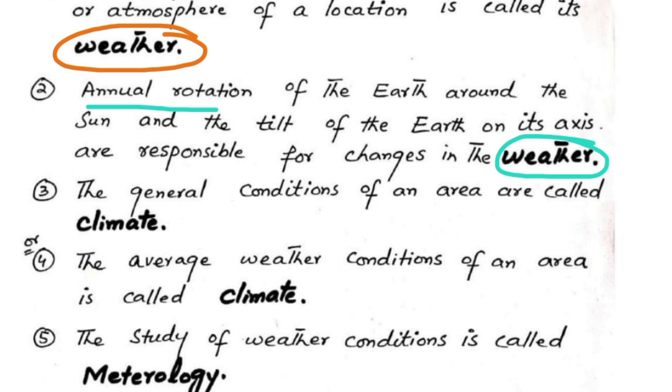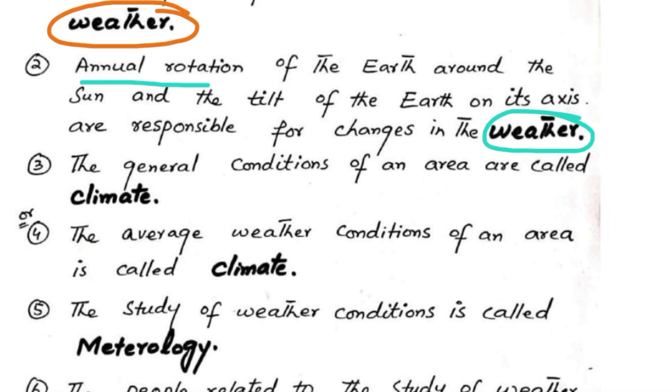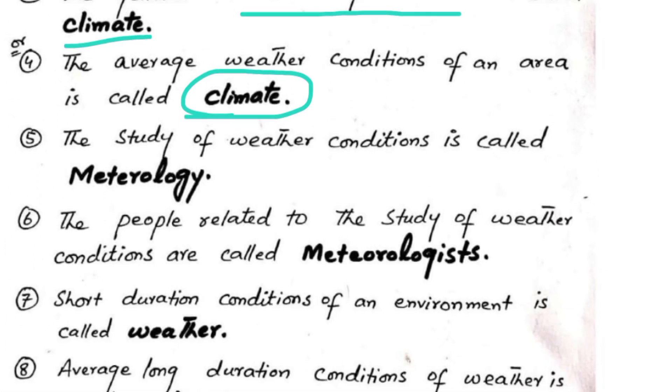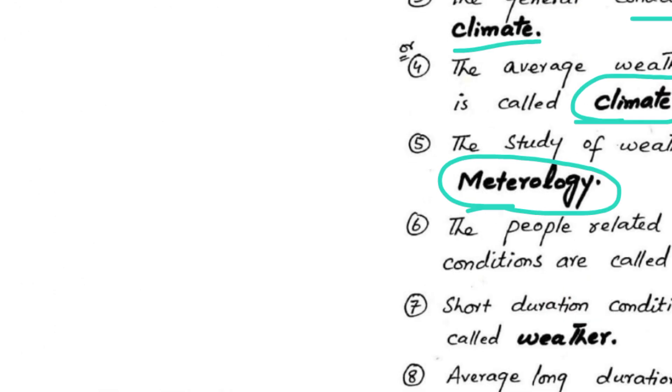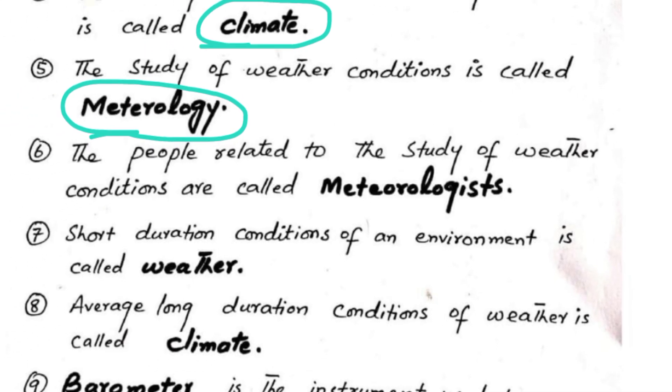The general conditions of an area are called climate. The average weather conditions of an area is called climate. The study of weather conditions is called meteorology.